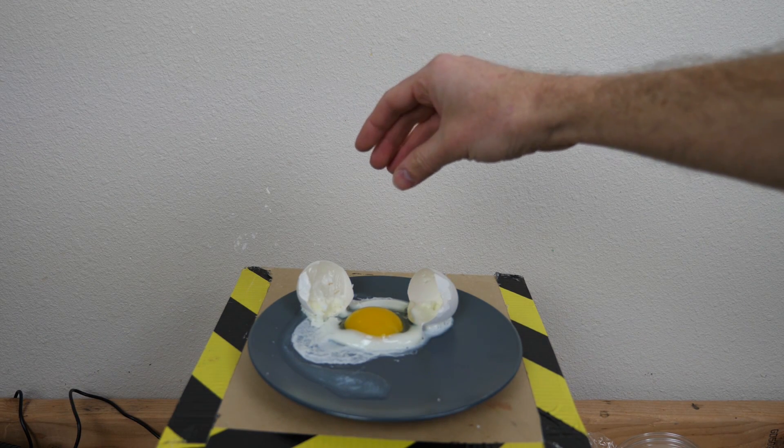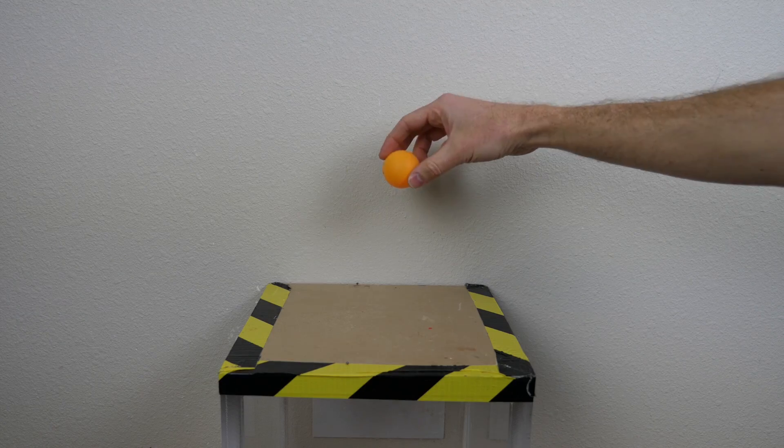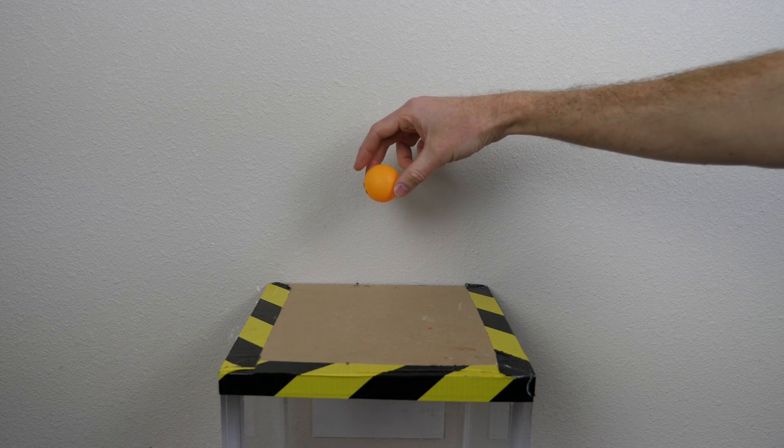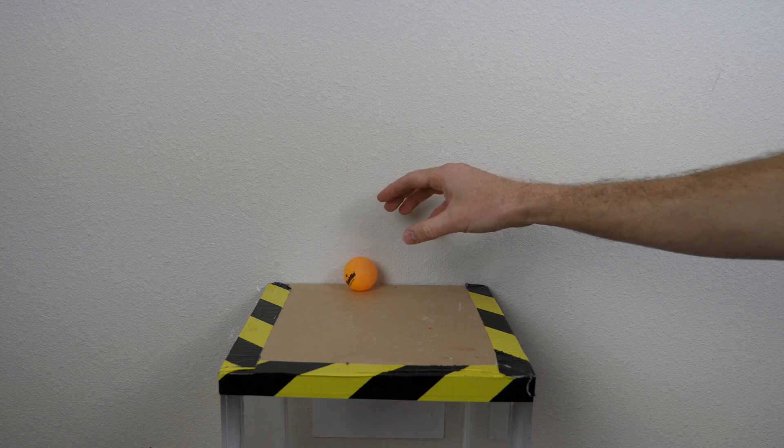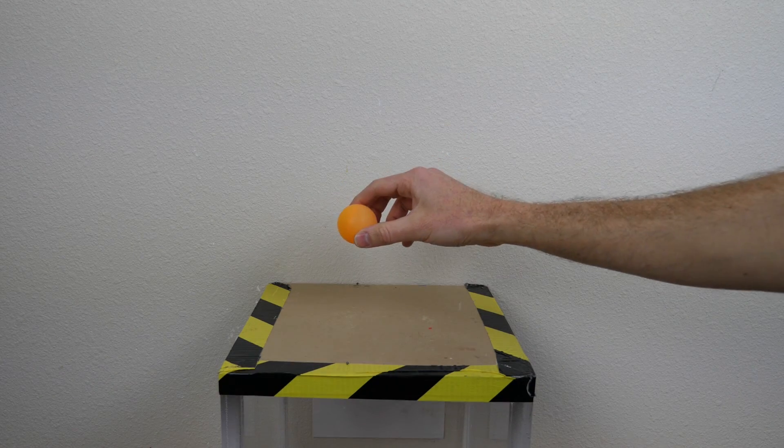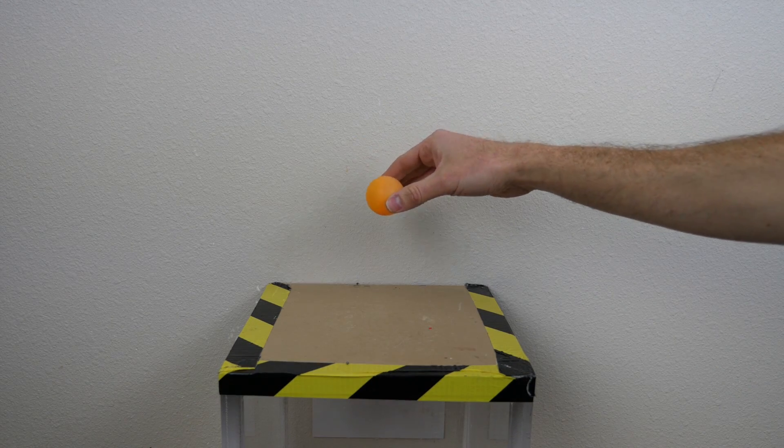Today I'm going to be testing if you can boil an egg just by dropping it. When you drop a ball on the ground, you notice that it starts out high and then as it bounces it gets lower and lower and lower until it eventually stops. But why does it do that? Why does it start out high and then get lower?